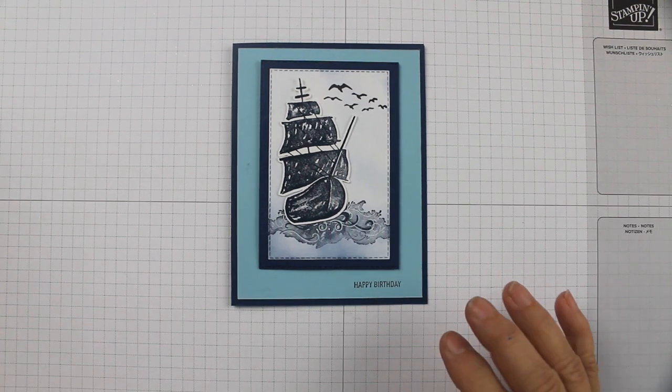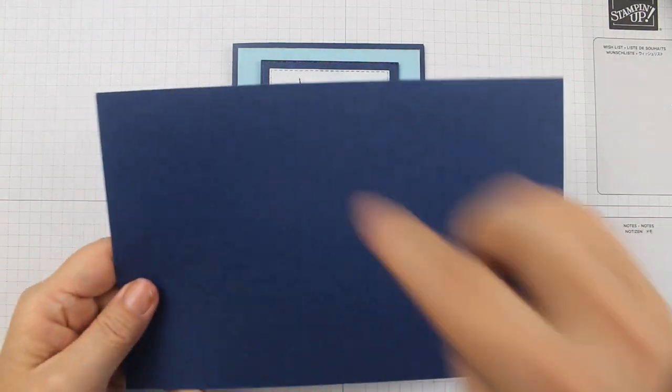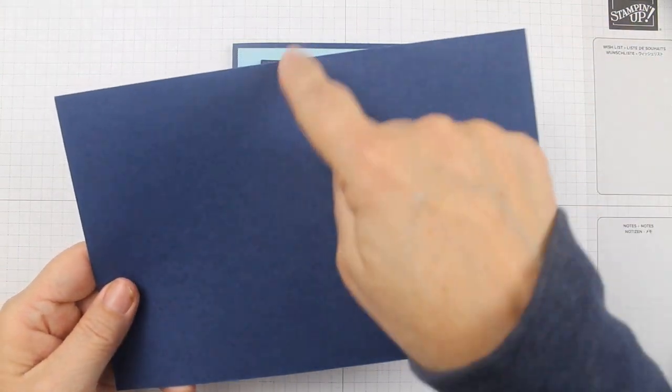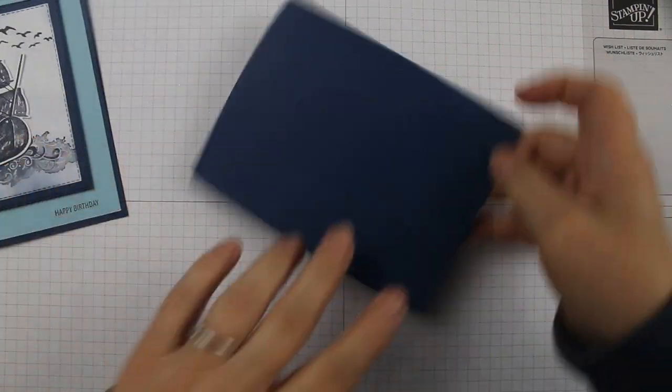Let's get started. Let's see what we need to make this card. It's actually very simple. I started with a piece of Night of Navy cut 8.5 by 5.5 inches, scored it at 4.25. You fold that in half and give that a nice crisp fold with your bone folder.